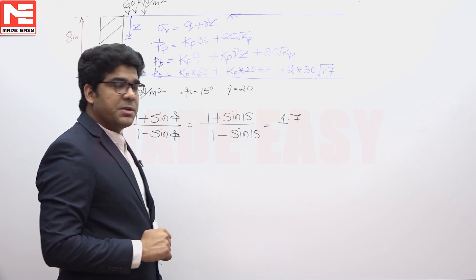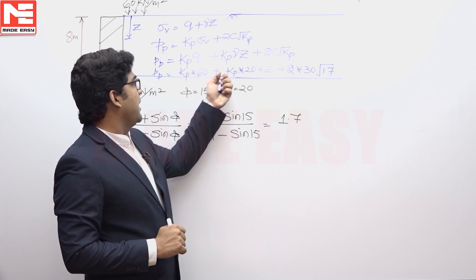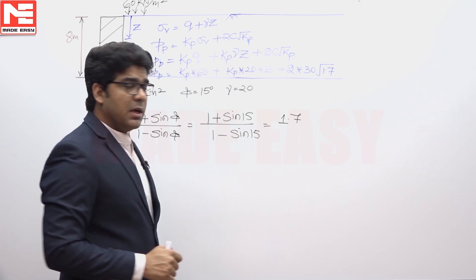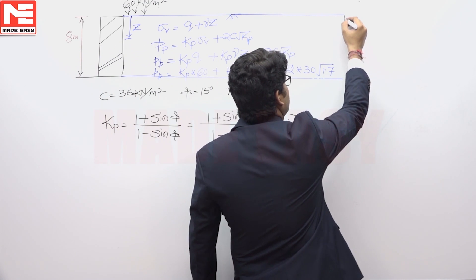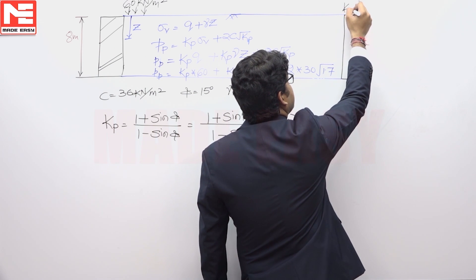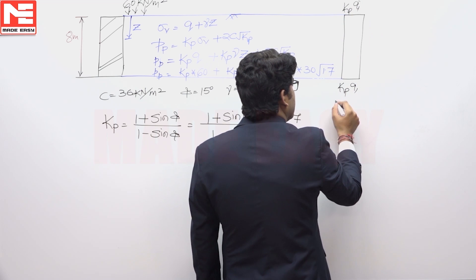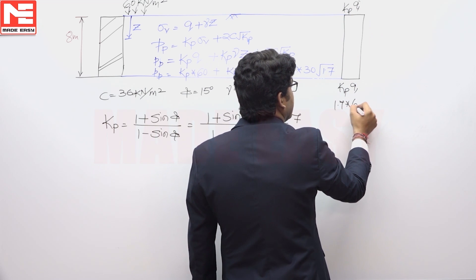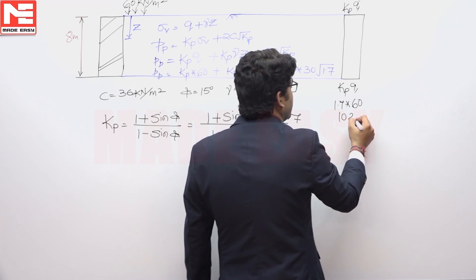So in this case three expressions are there: Kp q, Kp gamma z, and 2c root Kp. If we draw these diagrams, so this Kp q is this. Kp is 1.7 and Q is equivalent to 60, so this value is equivalent to 102.